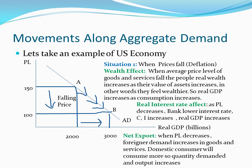The next situation is movement along the aggregate demand curve due to the real interest rate effect. This is a situation when the price level decreases from 150 to 100 points, because the bank lowers its interest rate to increase investment and consumption levels. Consumption and investment are components of GDP, so when the bank lowers the interest rate, overall consumption and investment increase, which means real GDP increases from 2000 to 3000.